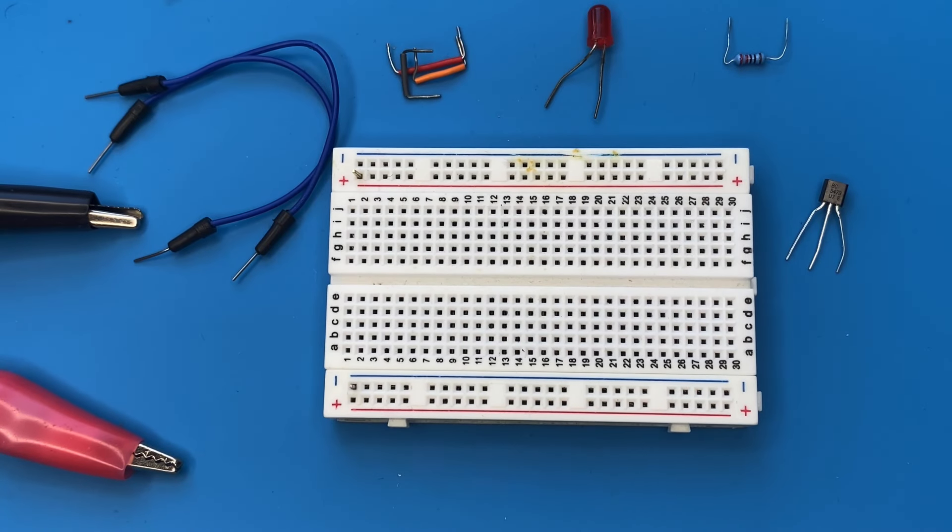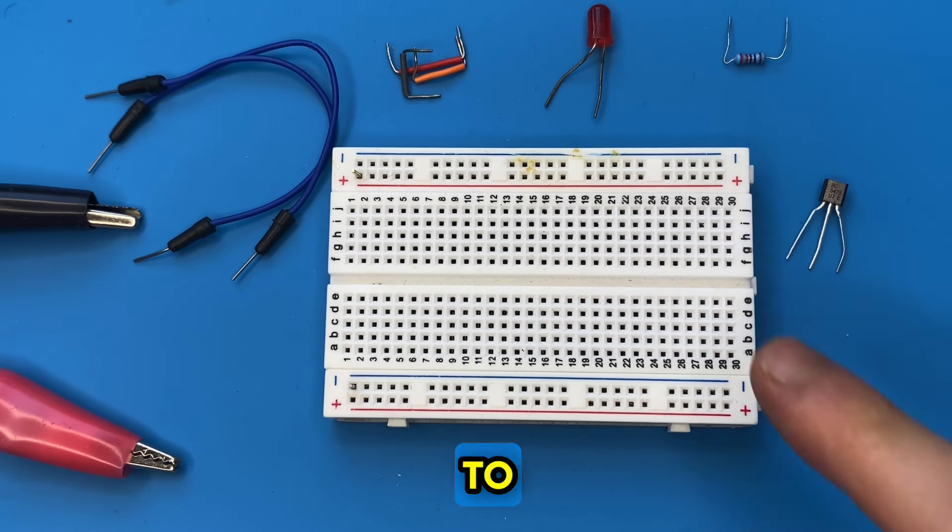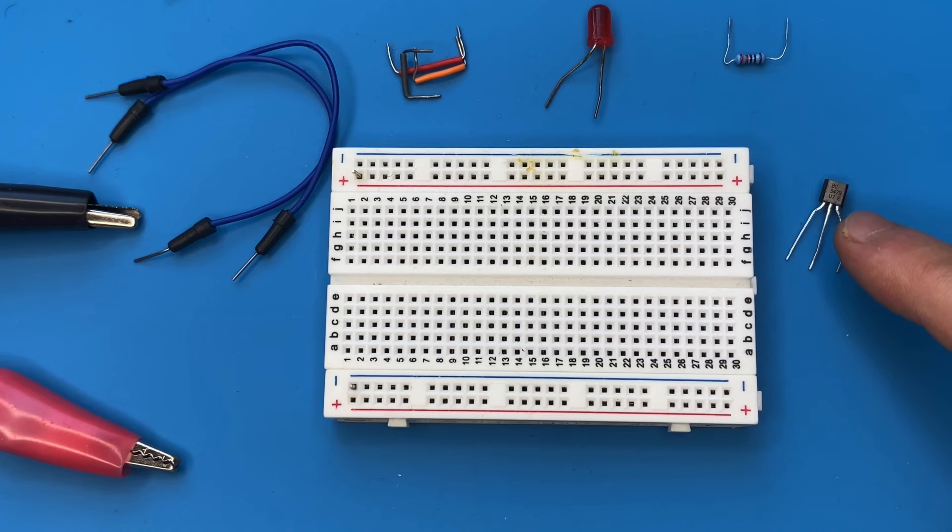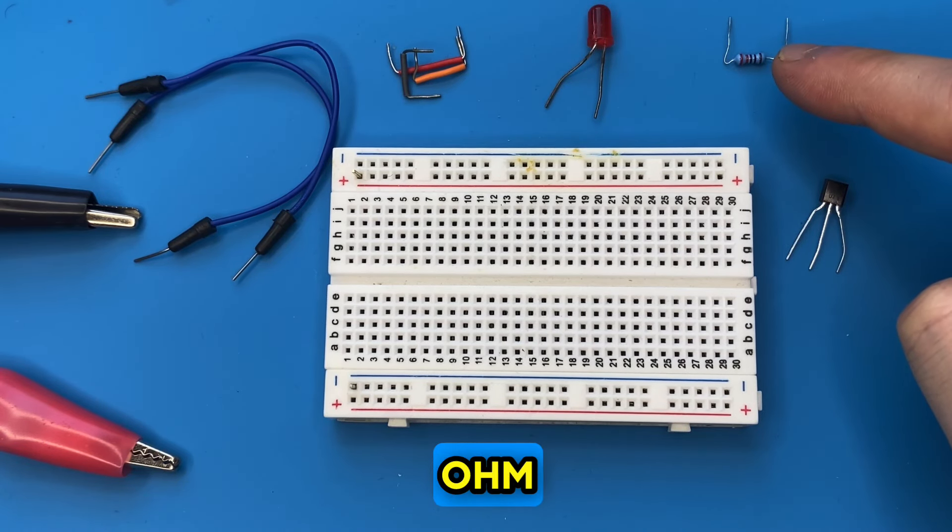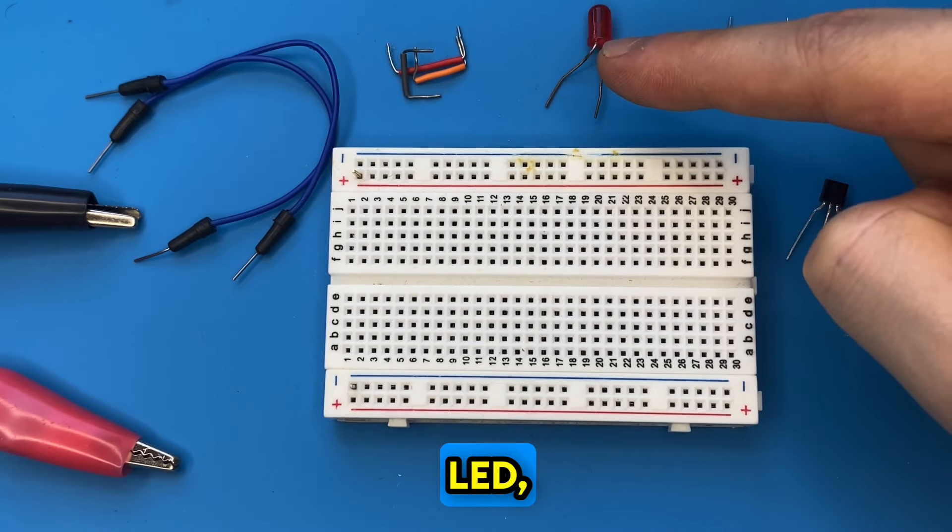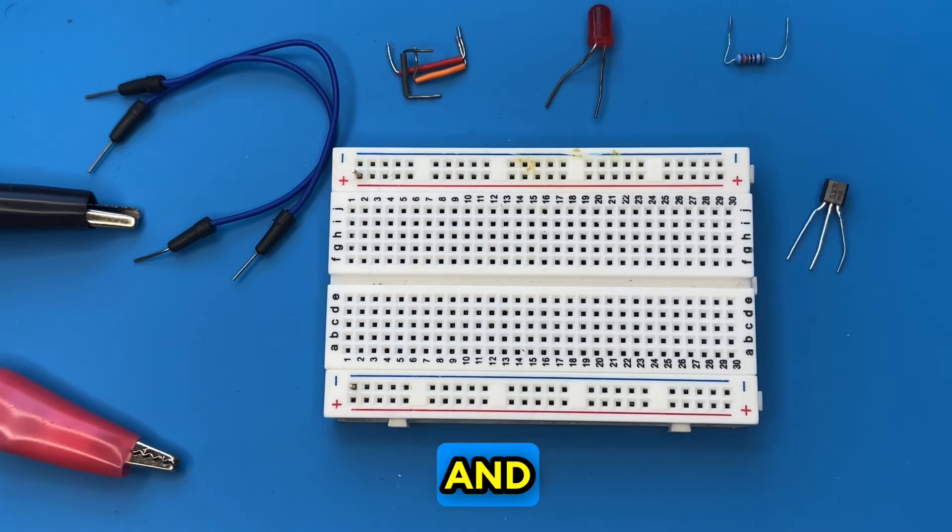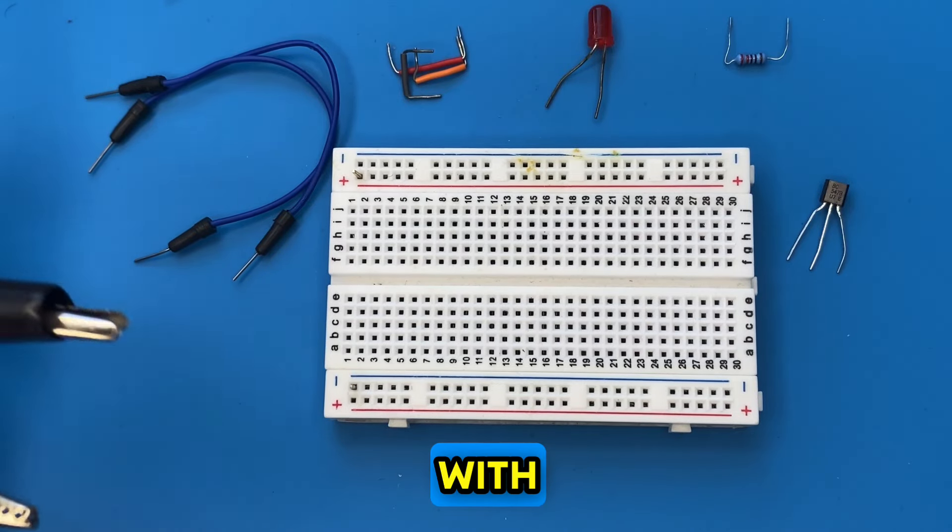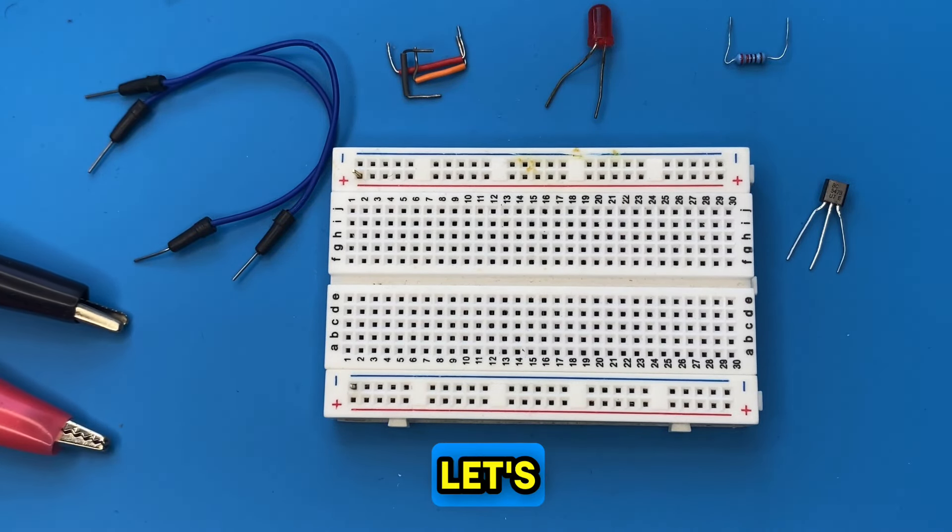These are the components you need for this project: a breadboard, BC547 transistor (NPN), 330 ohm resistor to limit the current across the LED, one LED, some jumper wires. I'm going to power the circuit with 5 volts. Let's get started.